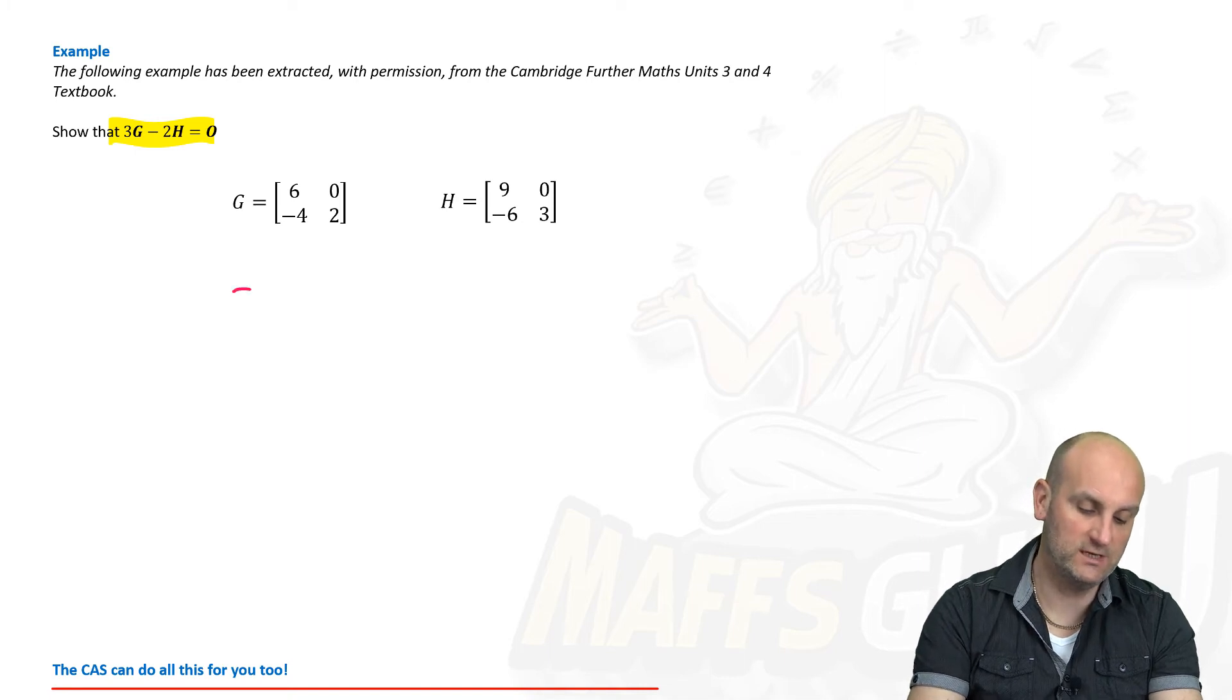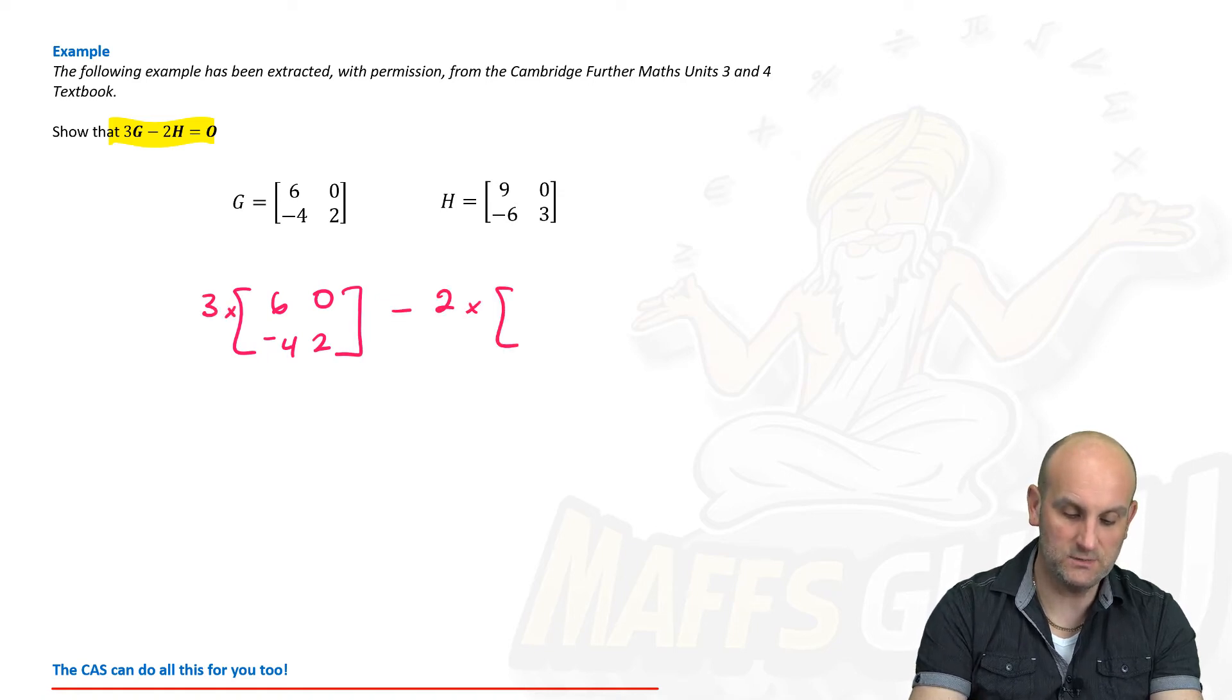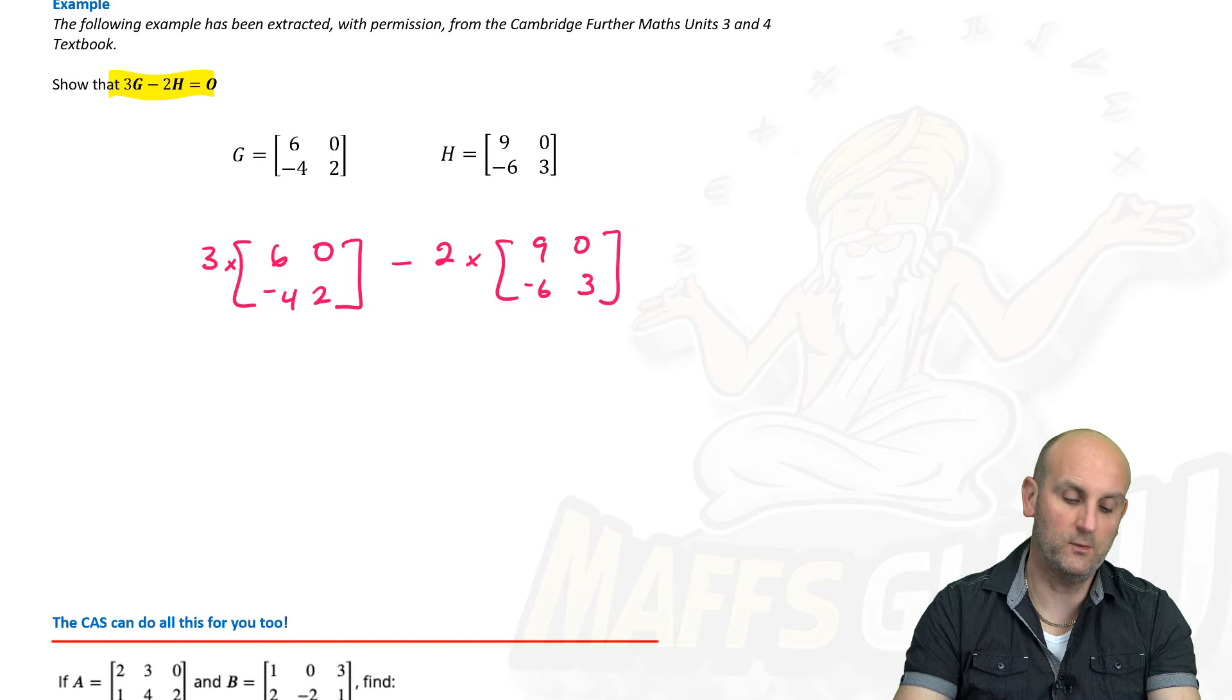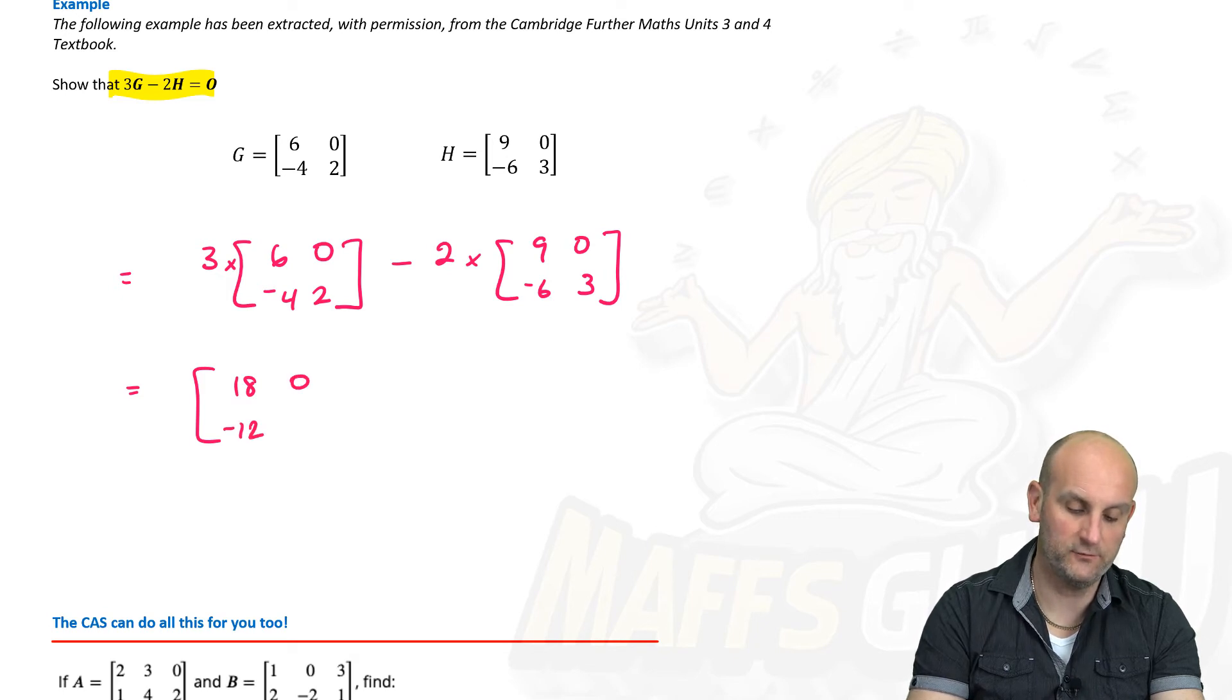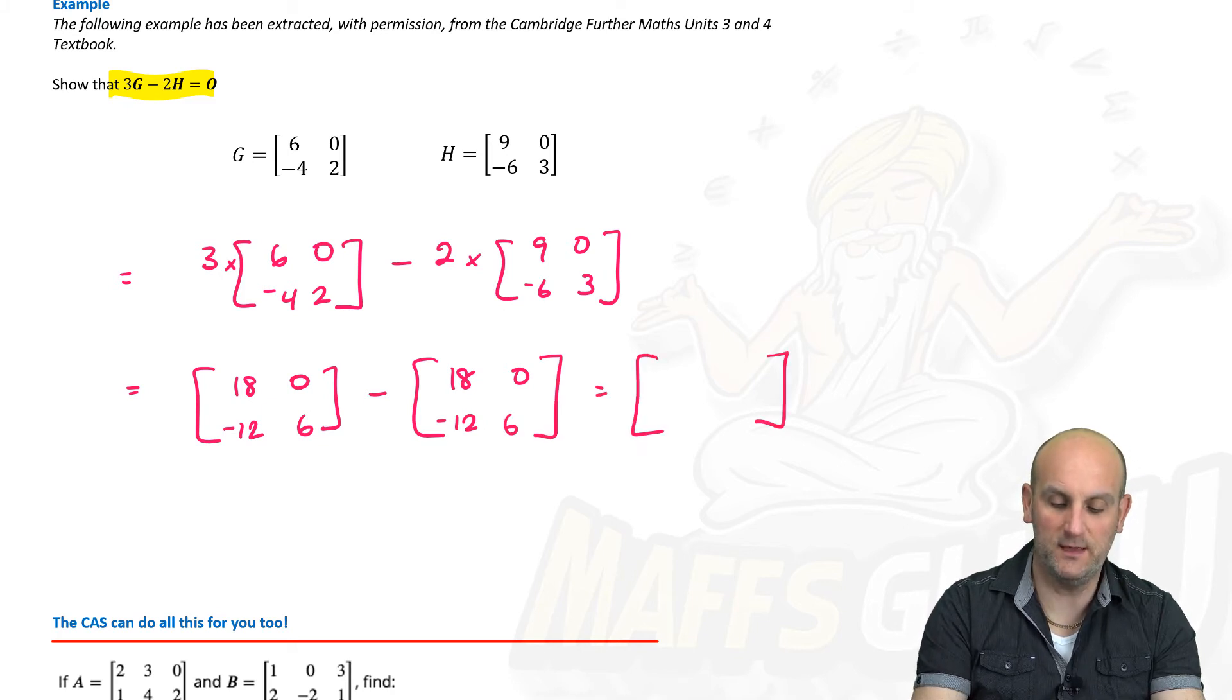Believe it or not, Cambridge massively came up with an example. So, I respect you guys. Here we go. Show that 3g minus 2h equals O. Not zero. O, as in the zero matrix. So, 3g. So, I've got g is 6, 0, minus 4, 2. And I want 3 times that. And I'm going to take away 2 times h, which is 9, 0, minus 6, and 3. Well, the first thing I need to do is the multiplication. I can't take them away until I do that. It's order of operations. So, 3 times 6 is 18, 0. 3 times minus 4, minus 12. 3 times 2 is 6. I'm going to subtract from that. 2 nines are 18. 2 zeros are 0. 2 times minus 6 is minus 12. And 2 times 3 is 6.